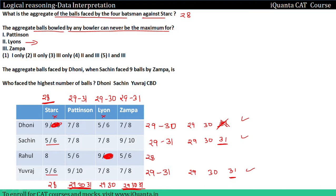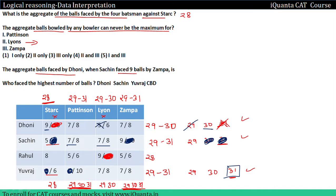Now we will solve: what is the aggregate of balls faced by Dhoni when Sachin faced 9 balls by Zampa? When Sachin faces 9 balls by Zampa, that means 10 balls come from here, then here is 31. So from here: 8 plus 7 = 15, plus 10 = 25, giving 5 here. Then 15 plus 9 = 24.